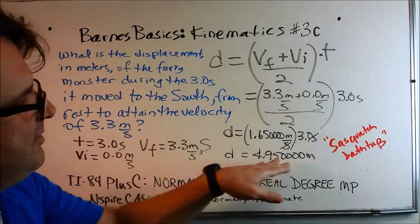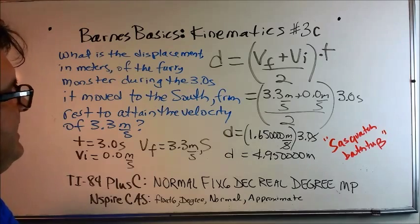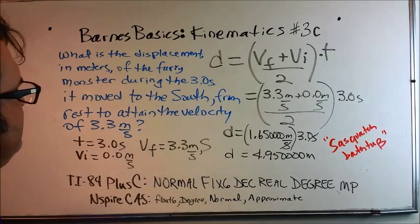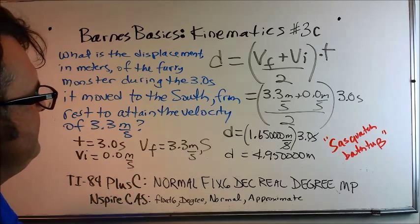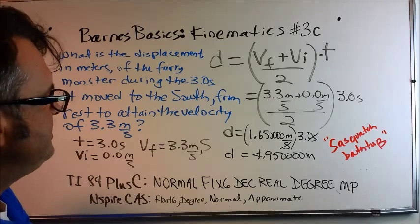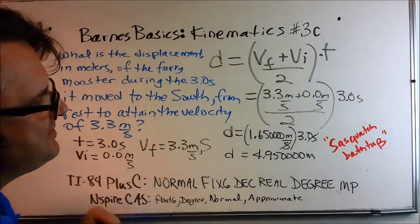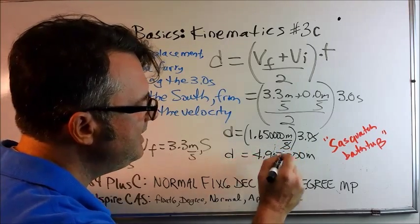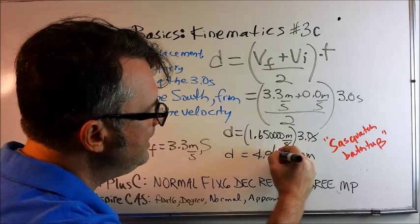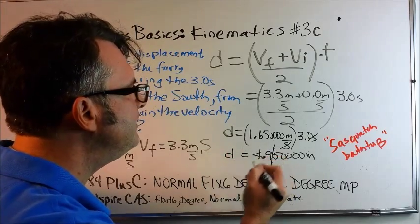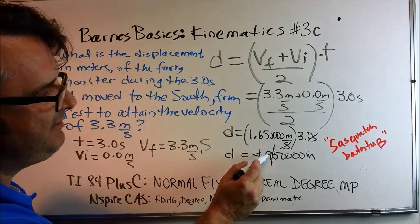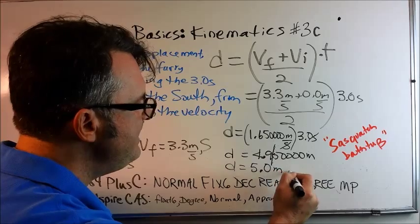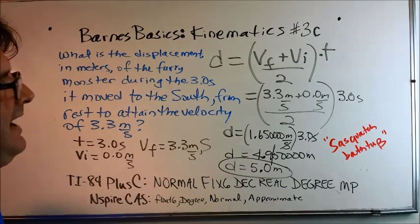So, as I attempt to report this answer in the proper sig figs, I look back at the information that I'm given. 3.0 has 2 sig figs, this 3 is a non-zero digit, and we have a 0 to the right of a non-zero digit, and to the right of a decimal, so that has 2 sig figs. Same thing with the 3.3, 2 sig figs. We'll start with the big number and head to the right, and we're going to cut it off right there. The 5 makes the 9 go up to a 0, and then that bumps the 4 up to a 5.